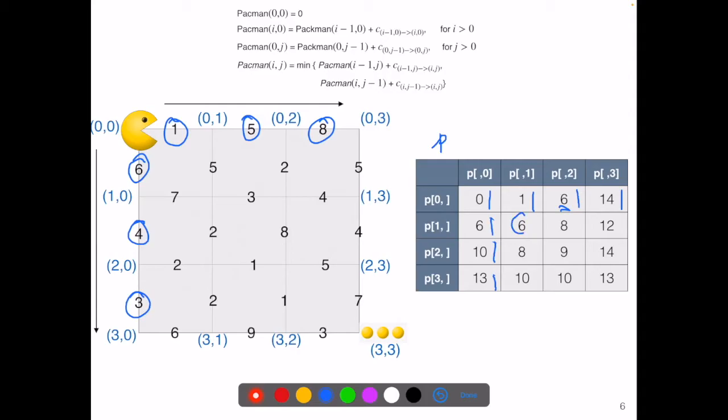Next, we get to p(1,1). In order to get to the point p(1,1), there are two options, either from p(0,1) plus 5, or from p(1,0) plus the cost of 7. So we compute both of them.